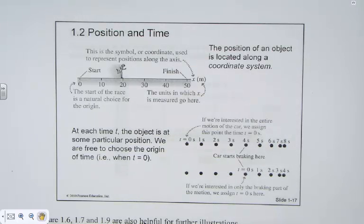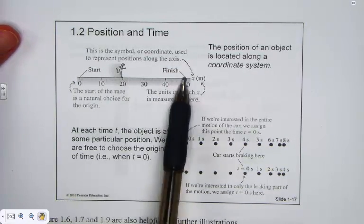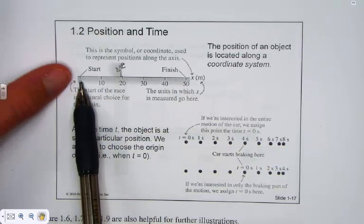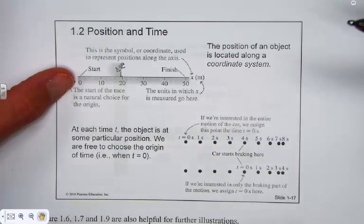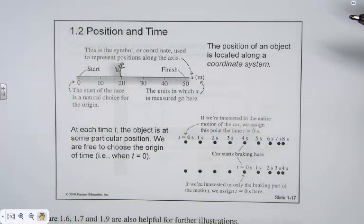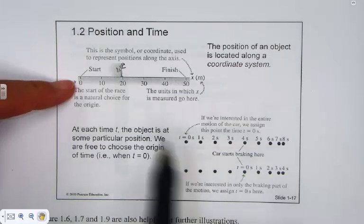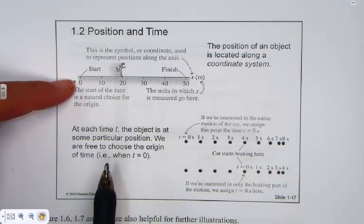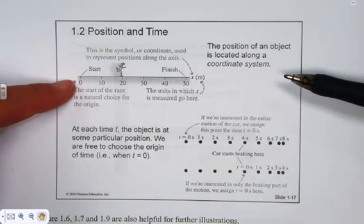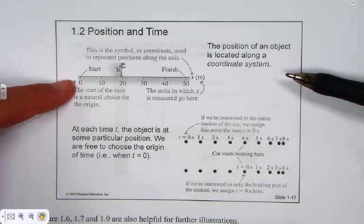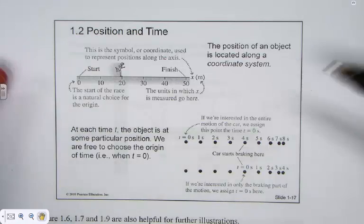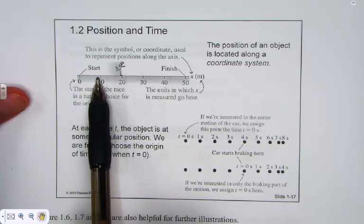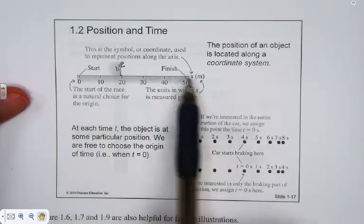We begin to consider position and time in this particular example. Let's suppose, in a linear fashion such as a straight run, we have a symbol that represents the start. Let's call that time zero or position zero. This is the symbol or coordinate used to represent positions along this particular axis. As time is going by, our runner is making progress towards the finish line. This is representing a coordinate system. The position of an object located along any particular linear fashion of coordinate system. Notice that at the start time, 10 meters, 20 meters, 30 meters, 40 meters, 50 meters,